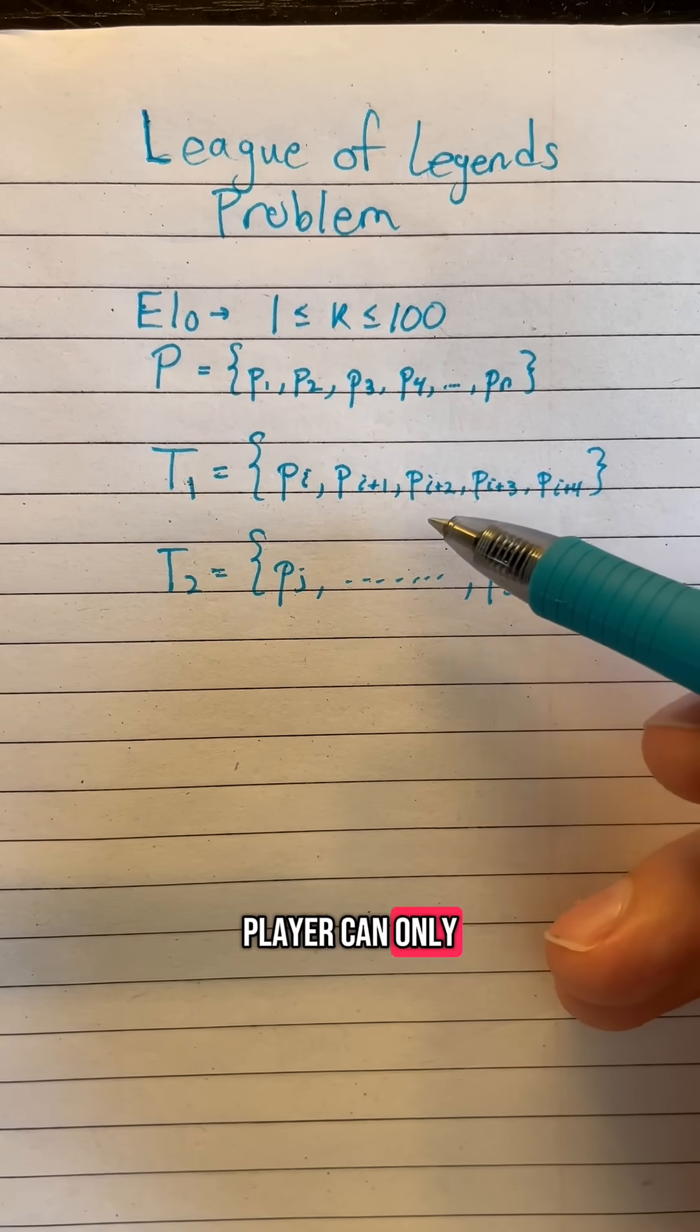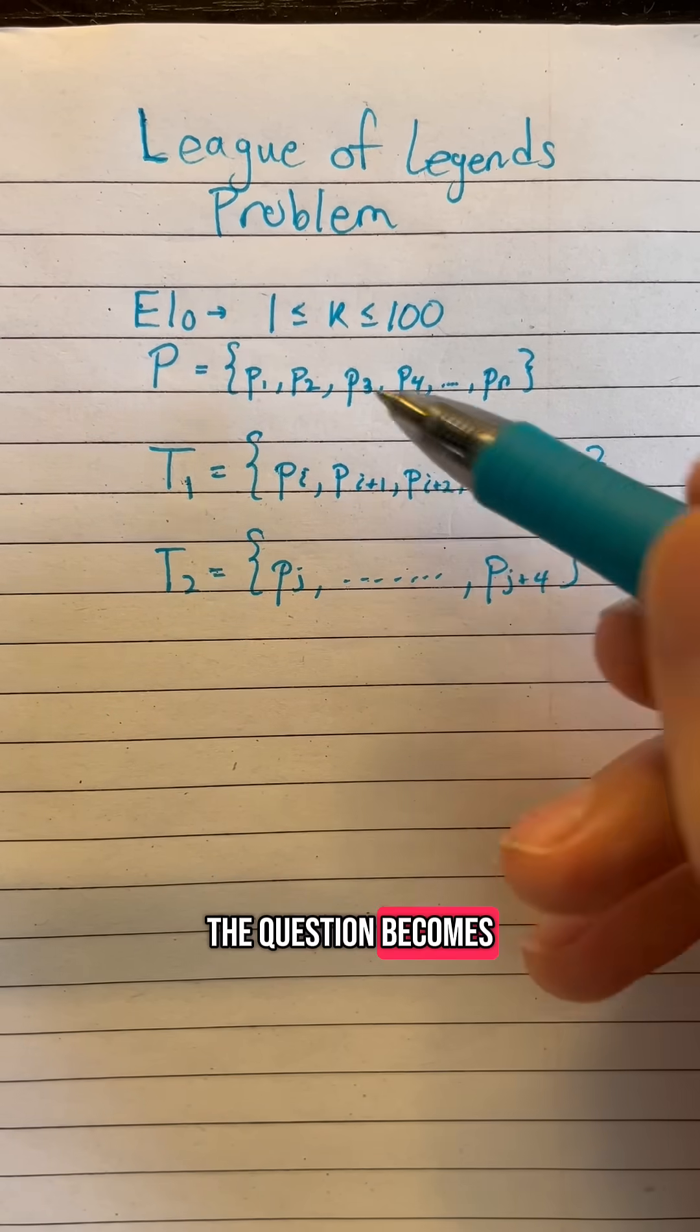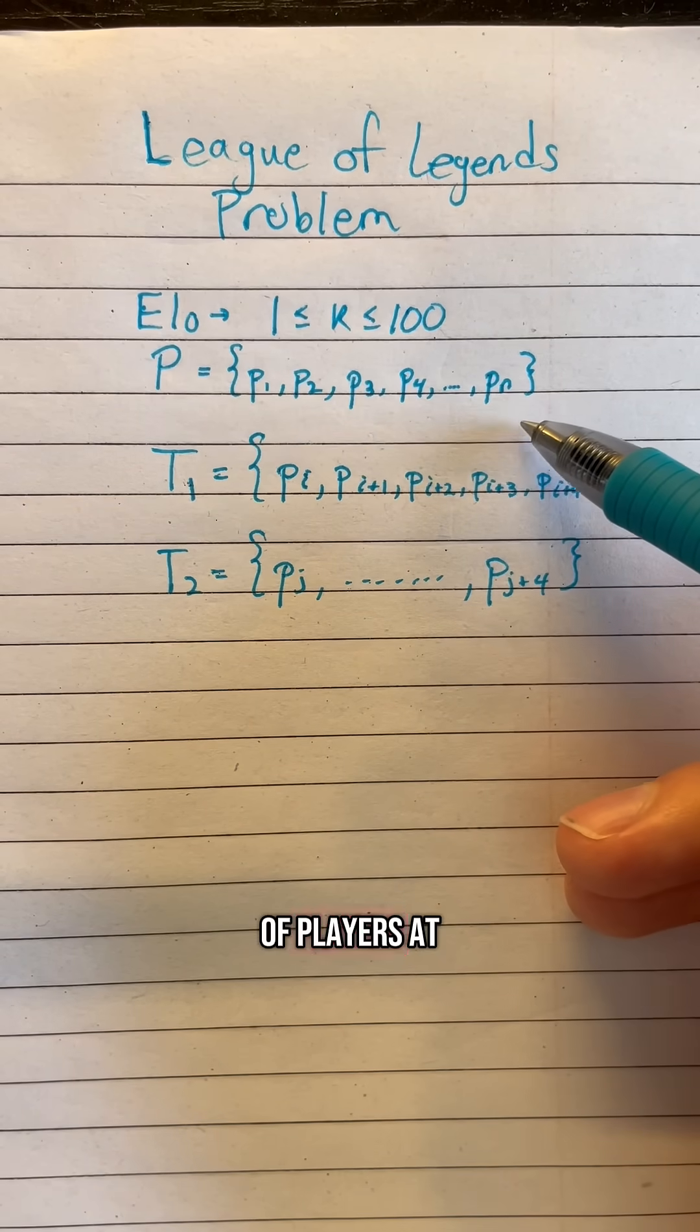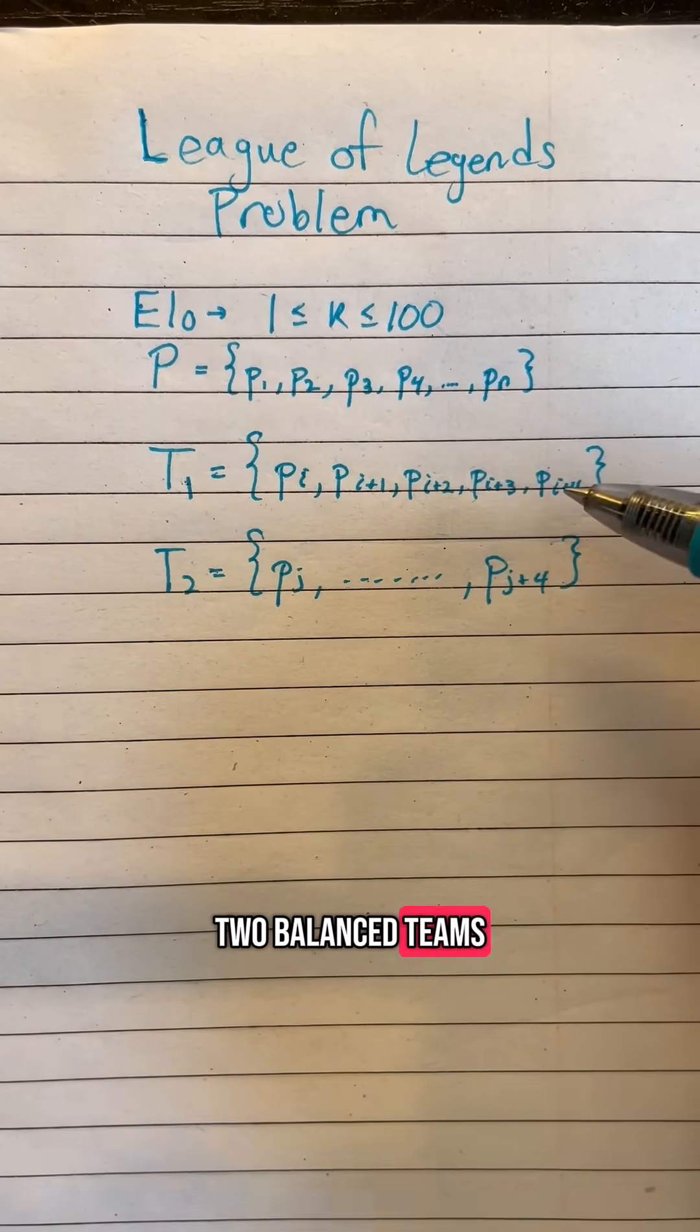Note one player can only be on one team. You can't have the same player being on both teams. The question becomes how many players do we need to have in our overall set of players at a minimum in order to guarantee that we will always be able to find two balanced teams.